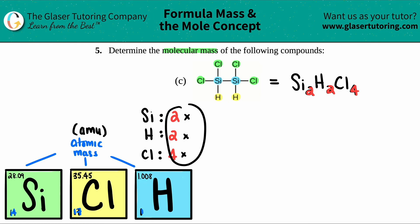But for right now we're just going to be taking how many we have and multiplying by those masses. So silicon, each silicon is 28.09 amu. I have two of them, so I'll just multiply by two. Hydrogen, I have 1.008 amu. And then chlorine is 35.45 amu, and I'm going to multiply it by four.